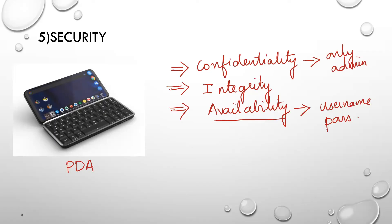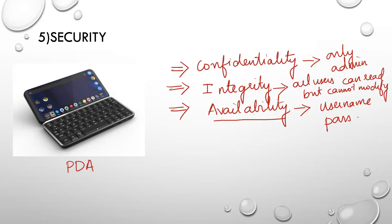All users can read the data but cannot modify it. So these three terms — confidentiality, integrity, and availability — are important in measuring the security of your system.